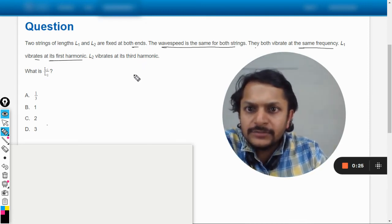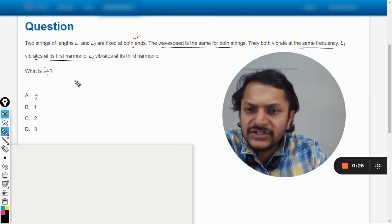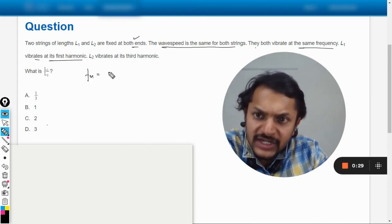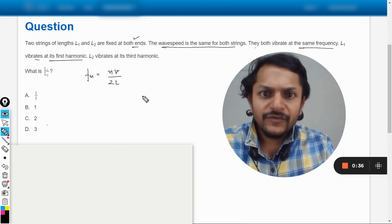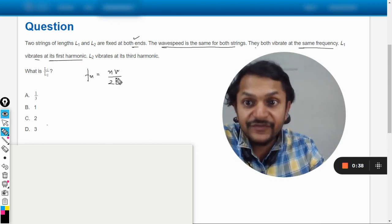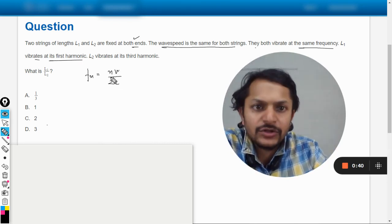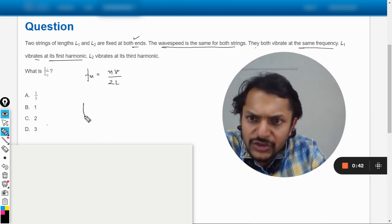So they are fixed at both ends, so the general formula that we would be using in both cases will be n·v by 2L, because they are fixed at both ends. The wave speed is the same and the length is different and the number of harmonic is also different.